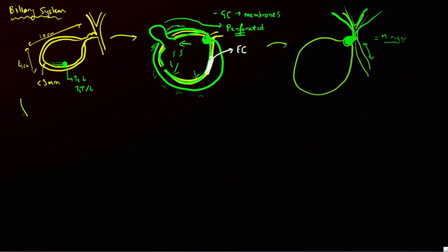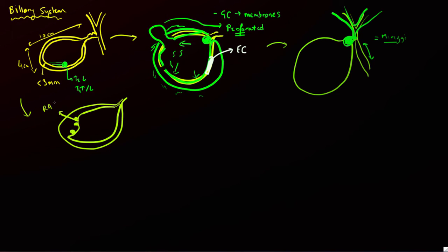Adenomyomatosis is an idiopathic condition where the gallbladder mucosa becomes thickened. Within this thickened mucosa, small diverticula form, each called a Rokitansky-Aschoff sinus. These can contain bile or cholesterol crystals. On ultrasound, you see thickened gallbladder wall with comet-tail artifact from cholesterol crystals. On MR, you see cystic spaces containing bile giving a string of pearls appearance.